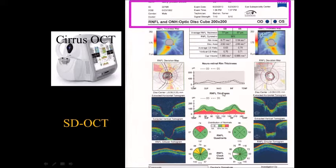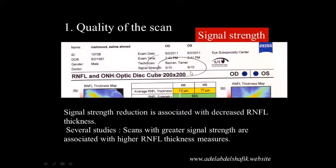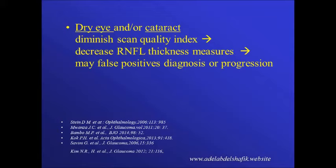We start by checking the signal strength, which should be 6 or higher. Signal strength reduction is associated with decreased retinal nerve fiber layer thickness. Several studies show that scans with greater signal strength yield higher retinal nerve fiber layer thickness measurements. Dry eye and cataract may also diminish scan quality, decreasing RNFL thickness and resulting in false diagnosis or false progression.